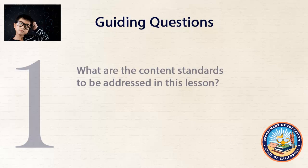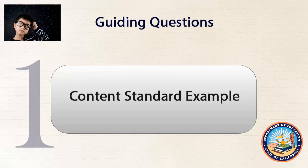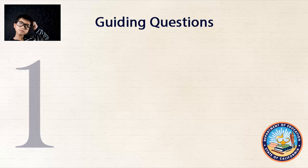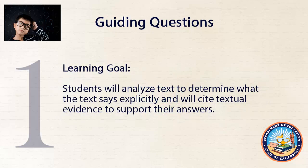Guiding Question 1: What are the content standards to be addressed in this lesson? What are the specific, standards-aligned learning goals of the lesson? Let's look at an example content standard that might be addressed in a lesson on reading informational text: Cite textual evidence to support analysis of what the text says explicitly, as well as inferences drawn from the text. A version of this standard appears at all grade levels and can be applied by content area teachers. A sixth grade standard has been chosen as the midpoint in the grade spans assessed. Collaborative grade level teacher teams will start by identifying the specific learning goal of a single lesson. One learning goal for this standard might be: students will analyze text to determine what the text says explicitly and will cite textual evidence to support their answers.